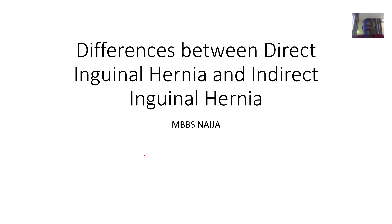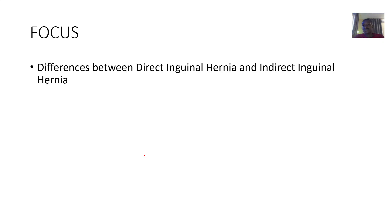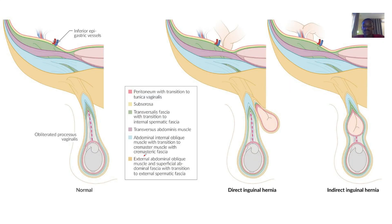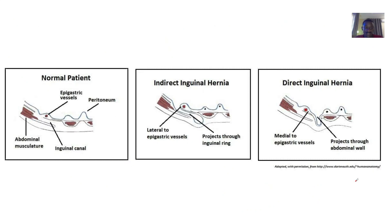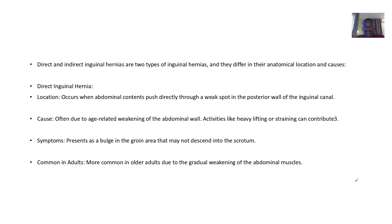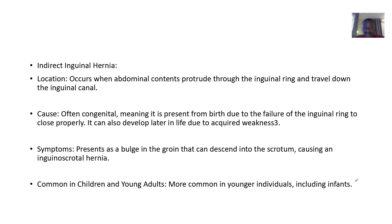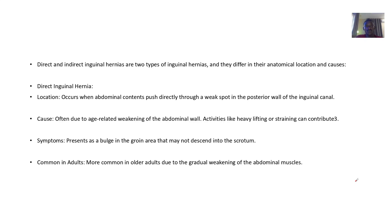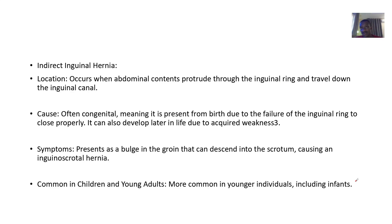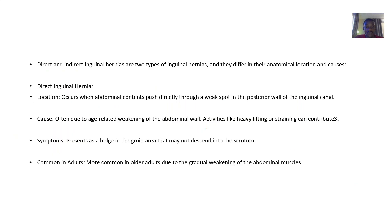Previously we spoke about inguinal hernia. Here we're looking at the differences between the two types of inguinal hernia — direct and indirect. Looking from the pictures, let's see how we can put it in written form. We have the direct inguinal hernia and the indirect inguinal hernia. For the overview, direct and indirect inguinal hernias are two types that differ in their anatomical location and their causes.